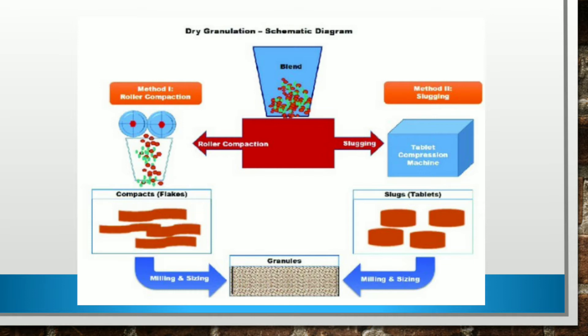In slugging, the original method of dry granulation employed a heavy-duty tablet press to compact the dry powder. The compacting process in this case is known as slugging, and the compacted material is known as a slug. It is typically 25 mm in diameter and 10 to 15 mm in thickness. The hammer mill is ideal to break up the slug to create granules.